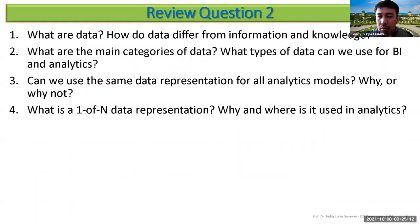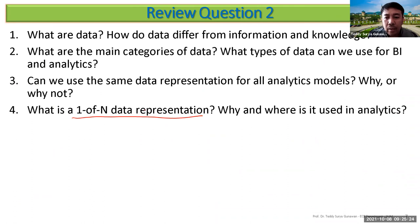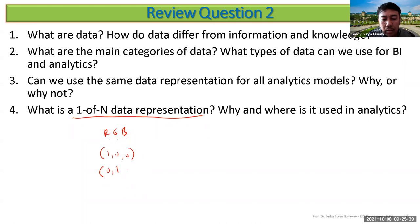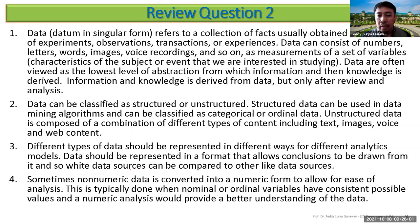One-of-N representation is used for classification. For example, with RGB color classes: R is encoded as [1, 0, 0], G as [0, 1, 0], and B as [0, 0, 1]. Only one position has the value 1 and all others are 0. This is how we represent classes for data encoding.